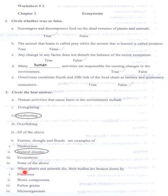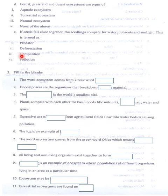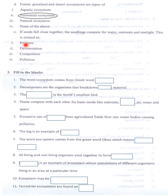When plants and animals die, their bodies are broken down by microorganisms. Forest, grasslands and desert ecosystems are types of terrestrial ecosystem. If seeds fall close together, seedlings compete for water, nutrients and sunlight — this is termed as competition.